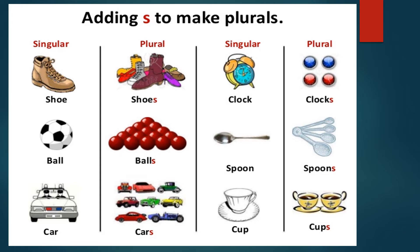So children, shoe, clock, ball, spoon, car and cup — they are in singular form because they are all one in number. And when you add S at the end to these singular forms, they change into plural form.